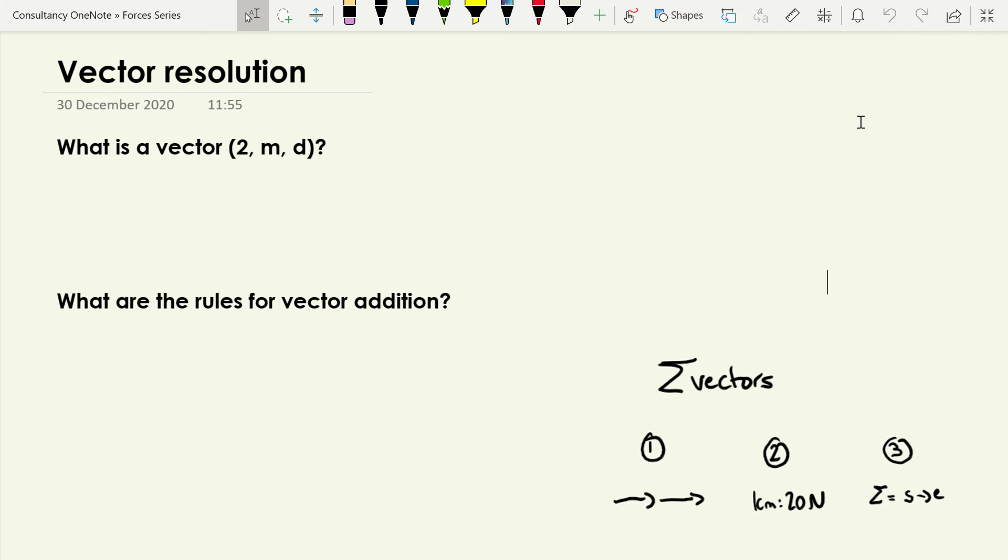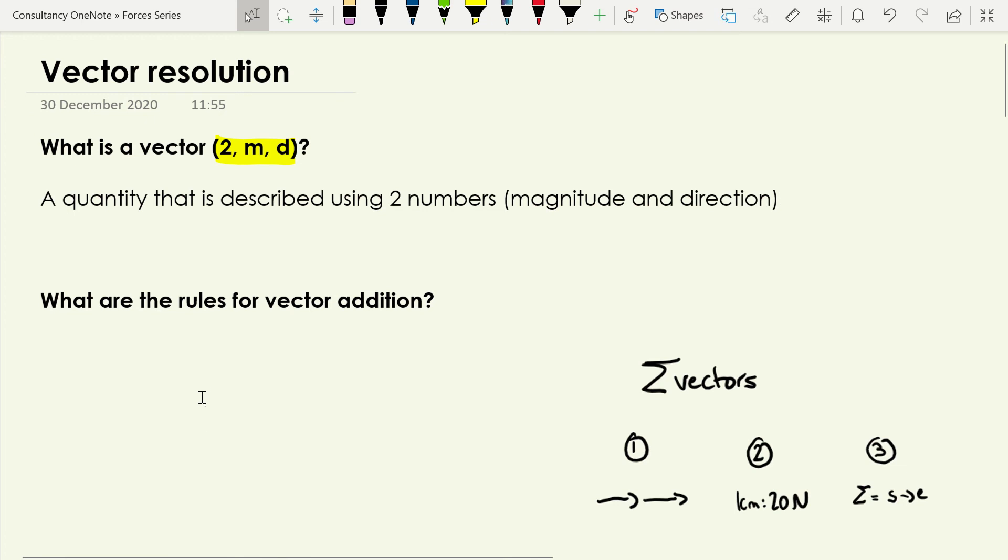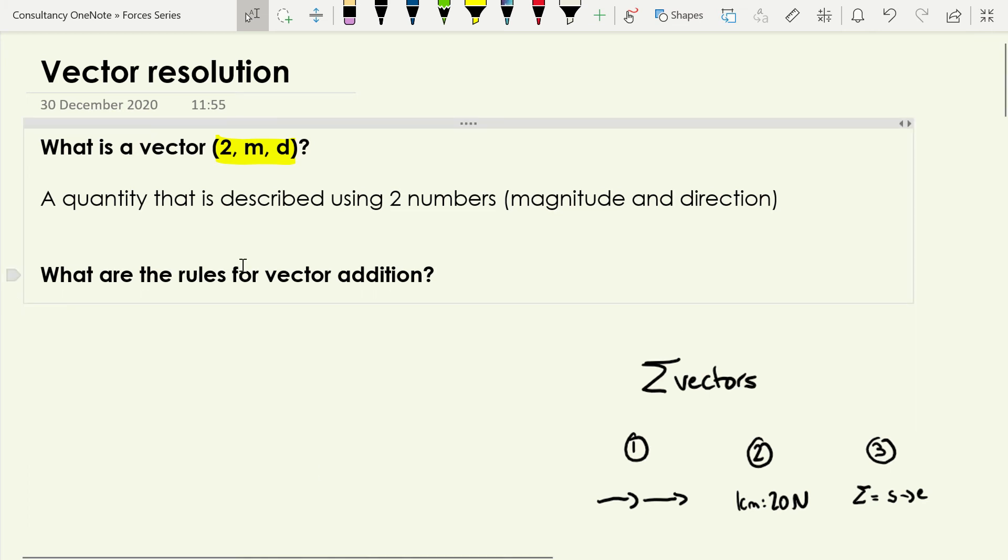So I'm going to assume that you have done that. Let's define what a vector is, looking for these key things. So it's a quantity that is described using two numbers, the magnitude and direction. Now strictly speaking, direction doesn't have to be a number, you can have something like north, but most of the time we will end up using numbers for doing it. So that's what a vector is. These are the three key things I was looking for.